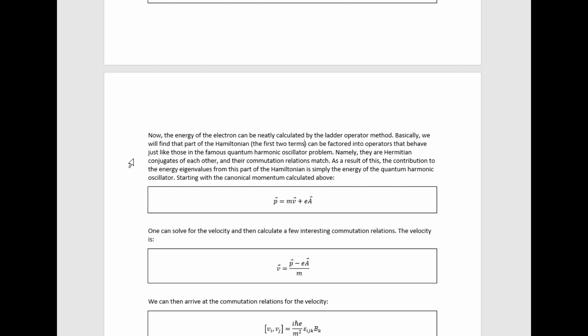Inserting that gives this Schrödinger equation. Now the energy of the electron can be neatly calculated by the ladder operator method. Basically, we will find that part of the Hamiltonian, the first two terms, can be factored into operators that behave just like those in the famous quantum harmonic oscillator problem.